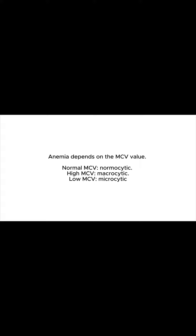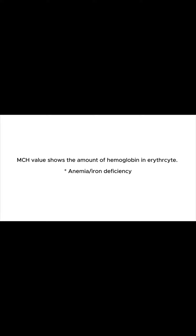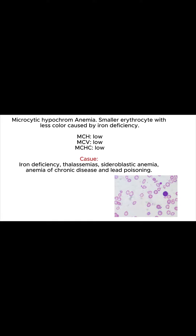MCV value is important to classify anemia. If the MCV is normal, it is called normocytic, meaning the erythrocyte has a normal size. If MCV is higher, it is called macrocytic, meaning the cell size is bigger. If MCV is lower, it is called microcytic, meaning a small cell. MCH value shows the amount of hemoglobin in the erythrocyte.